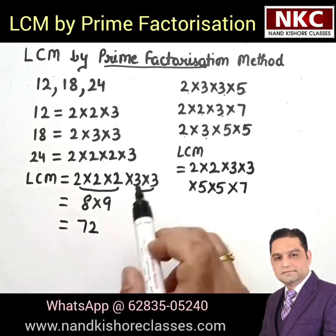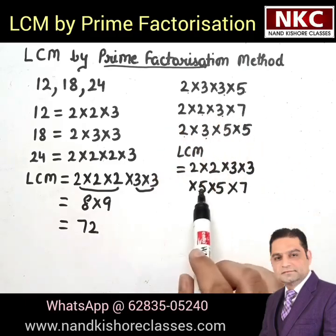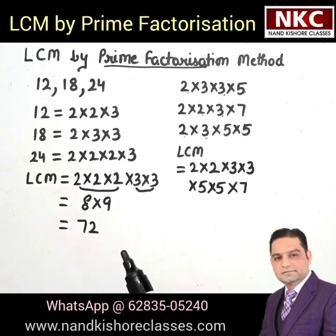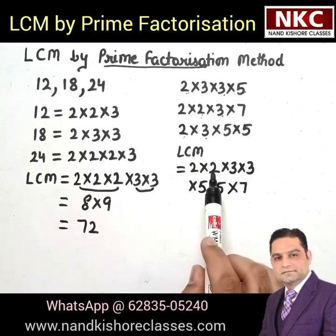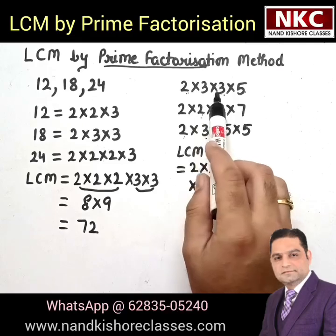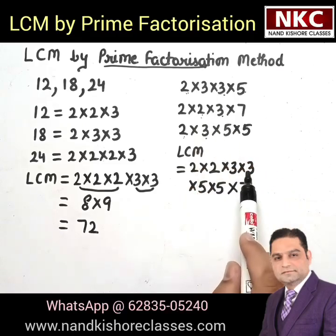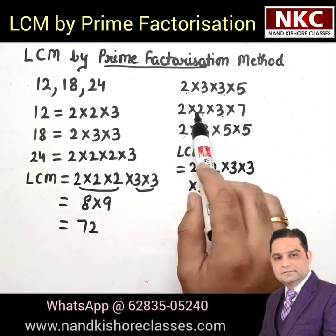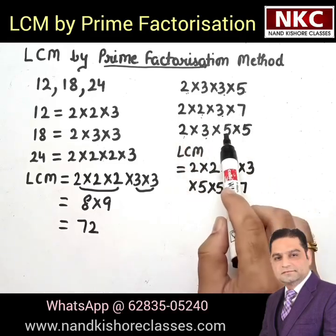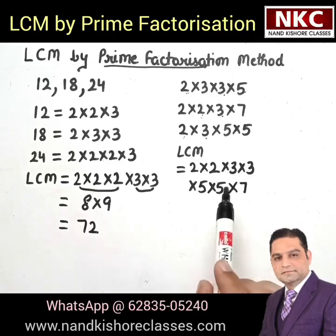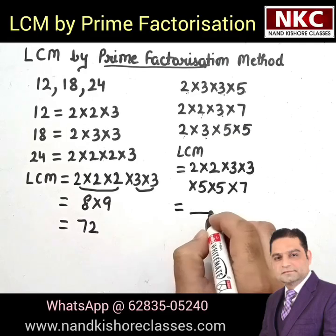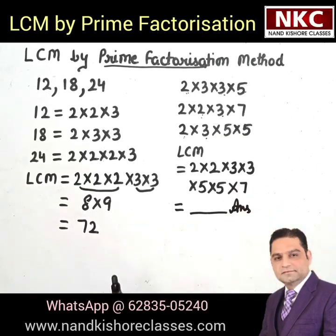Let me repeat: you just need to check that we are not going to miss any number — all numbers will be written in the LCM. The only thing is, whichever prime appears the highest number of times, that count we need to consider. Like 2 was coming once, 2 times, and 1 time — I took 2 times 2. 3 was coming 2 times in the first, then once, once — I took 2 times. 5 was coming once in the first; even though it's not in the second, I take it twice because it appears twice in the last. 7 is not coming anywhere else, but I still write it. That is how we find the LCM — just multiply all of them and you get the answer. Please do multiply and tell your answer in the comments. Thank you so much.